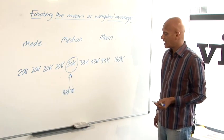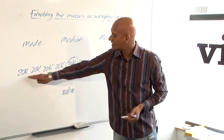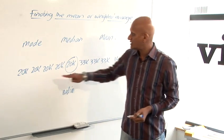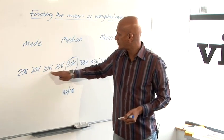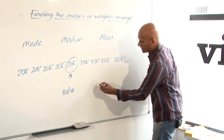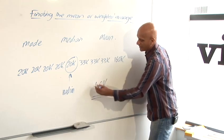But if we wanted to work out the mean, what we'd be doing is we'd be adding them all up and dividing by how many there are. So add them all up and divide by one, two, three, four, five, six, seven, eight, nine. And when you do that, you get an answer of 40,000 pounds.